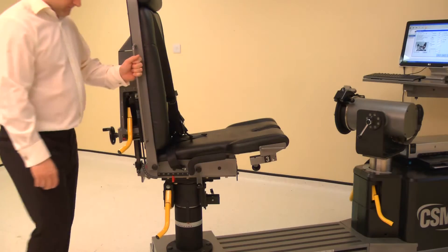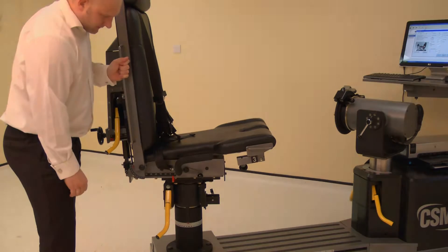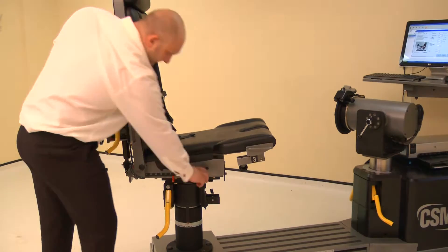The chair fore-aft is altered by raising either locking handle, then slide the chair bottom forwards or backwards. Adjust the chair fore-aft to position 15. Lower the locking handle to secure.